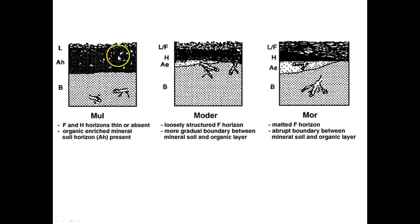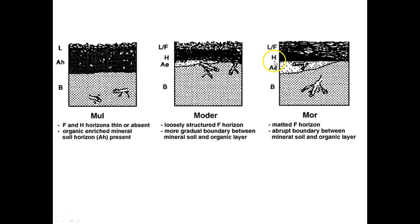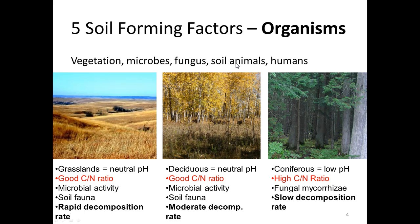The mull tends to have an AH diagnostic horizon, the mor has an H horizon, and definitely a matted F horizon with a clear, abrupt boundary between the LFH and the mineral soil. The moder is sort of a mix of the two.